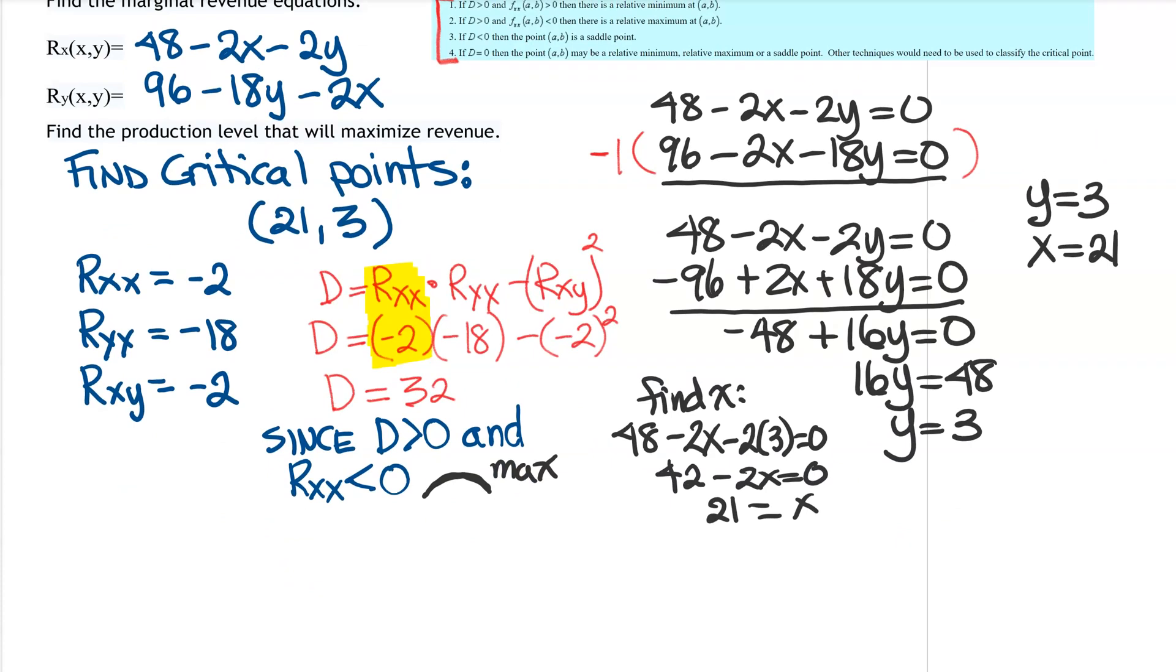So at our critical point, so at the point 21, 3 is a maximum. Now that max is found by plugging our critical point back into the original. So we have to take 21, 3, go back into that original revenue function, and you end up getting 648.